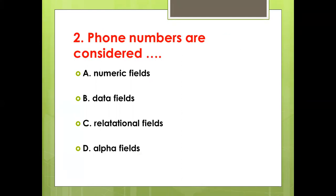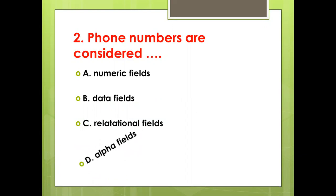Second bit: Phone numbers are considered — Option A: Numeric fields. Option B: Data fields. Option C: Relational fields. Option D: Alpha fields. Answer: Option D, Alpha fields.